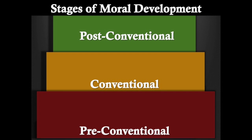Kohlberg's theory of moral development is presented in three levels and six stages. We are going to visualize the stages as steps because Kohlberg believed that you could not advance to a higher stage before mastering the initial stage.